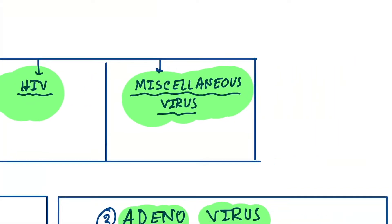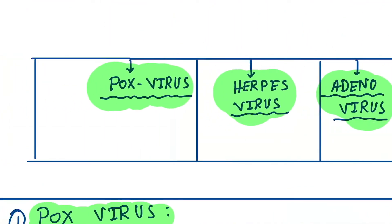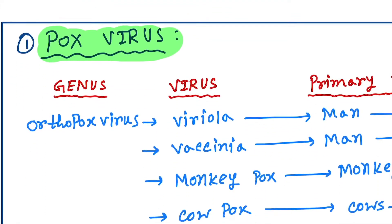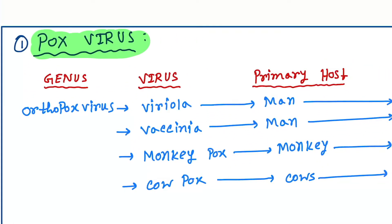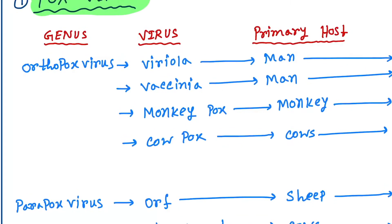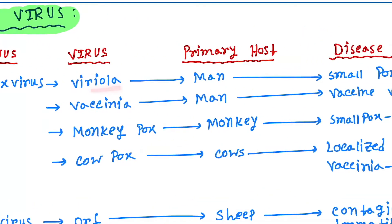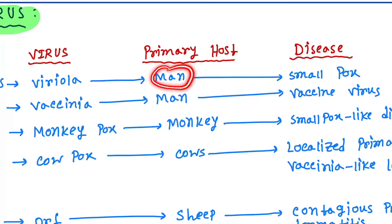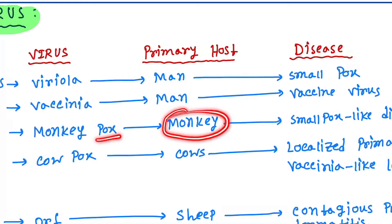First is the poxvirus. The genus is orthopoxvirus. The viruses are variola, vaccinia, monkeypox, and cowpox. The primary host for variola is man, vaccinia primary host is man, monkeypox primary host is monkey, and cowpox primary host is cow.